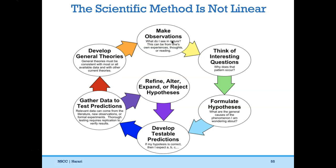The scientific method is not linear — it's a cycle that feeds into itself. We start with making observations: what do you see in nature, what's interesting about a pattern? You could be walking down the street and see a bird doing a weird behavior and wonder why, or you could be on the beach and notice that only green seaweed grows on one side and only red seaweed on the other. Why does that pattern occur? That's when you think of interesting questions.